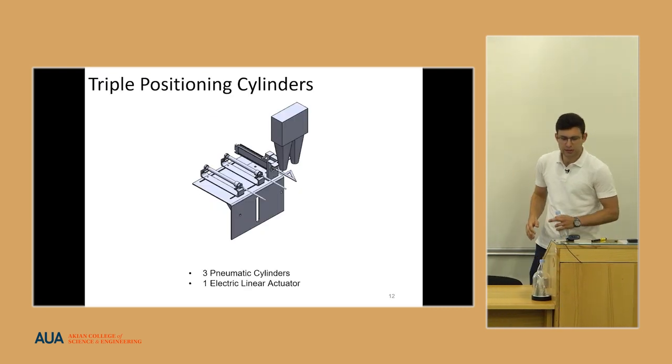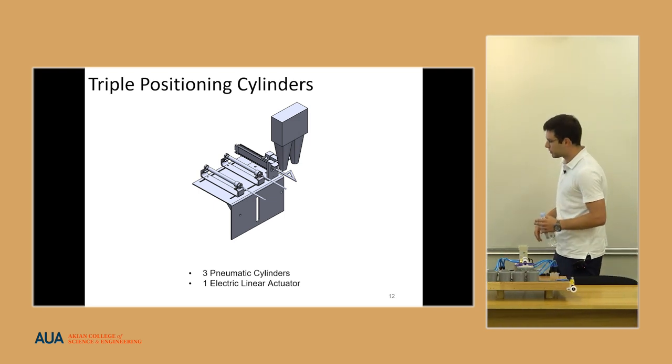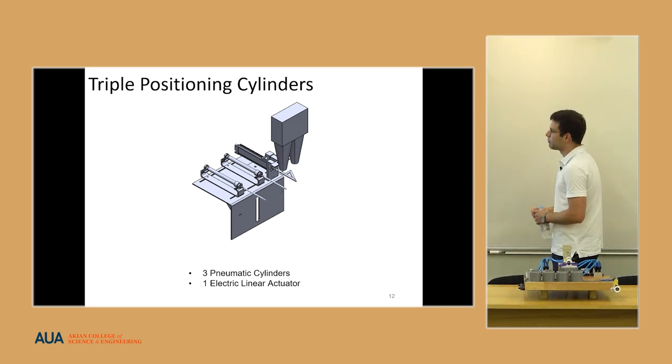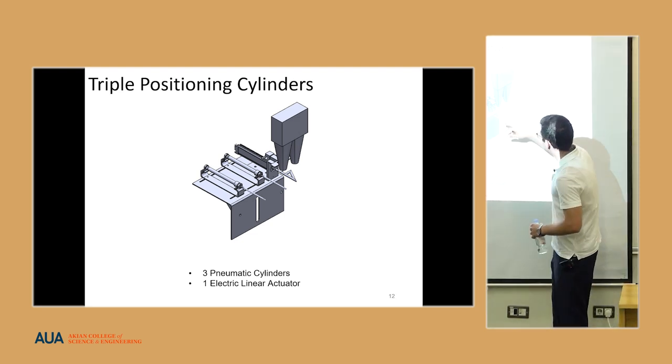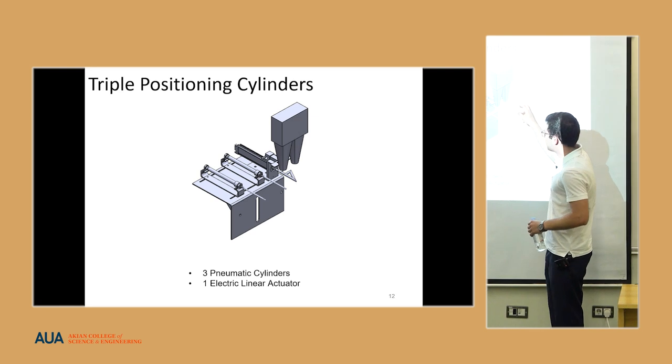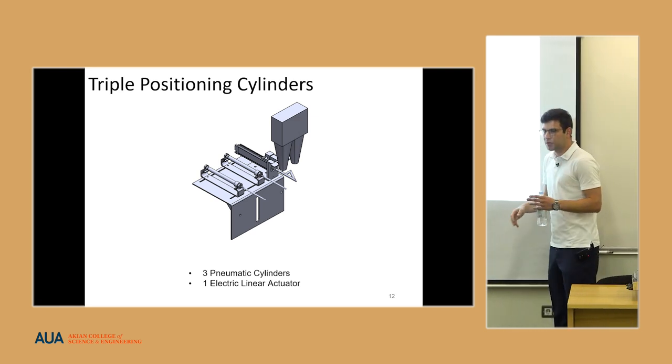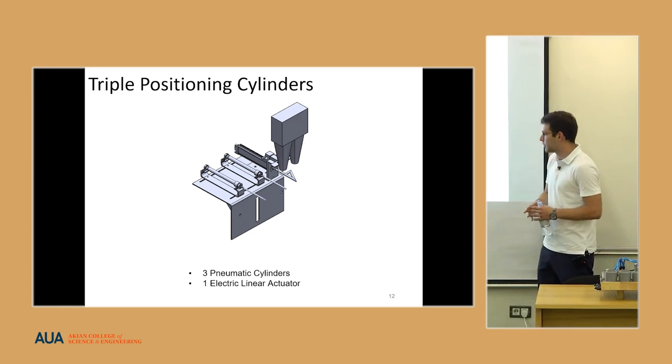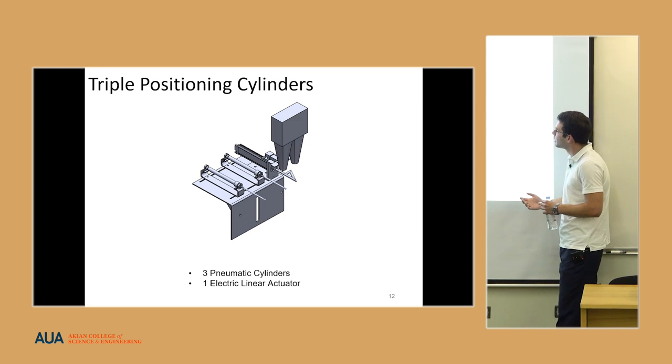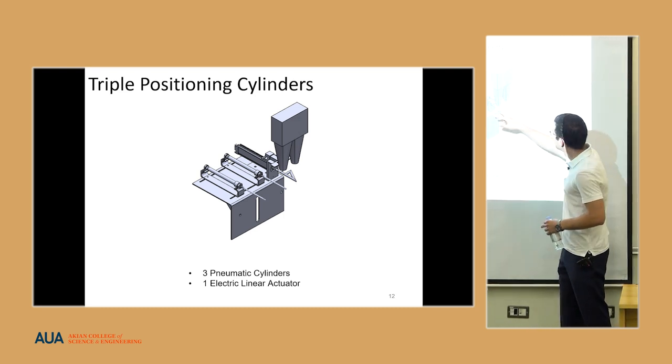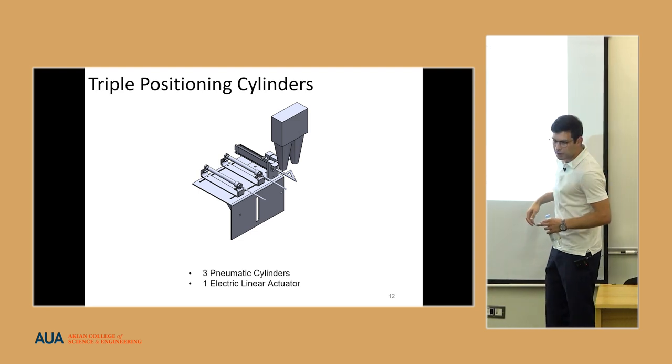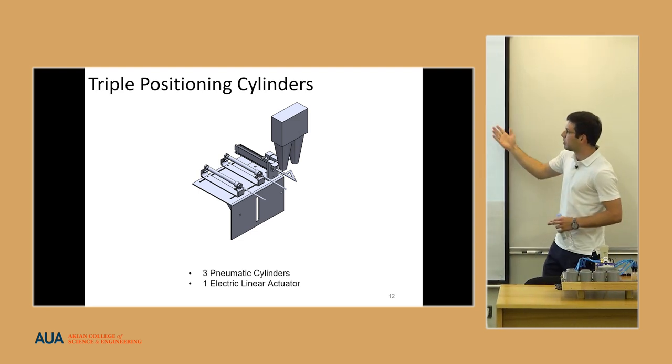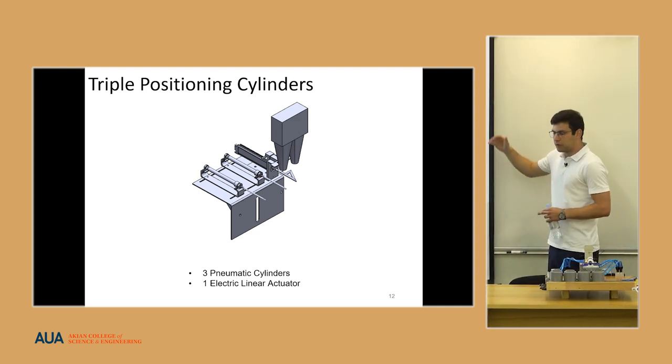The triple positioning cylinder system, which I already said is the main part for the automation, is attached on the framing part. It has three pneumatic cylinders which are these ones and they are responsible for positioning and controlling the movement of the bottles. And one electrical linear actuator which you can see here with its custom made 3D printed part on it. So I call them stage gates.